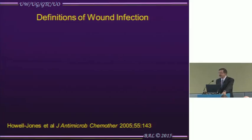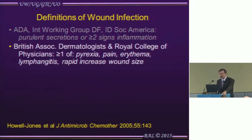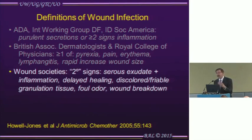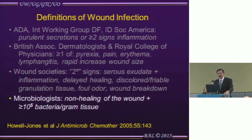What do societies that need to define wound infection do? They all take slightly different routes. Some say it's the presence of pus or two or more signs of inflammation. Others say you need fever, pain, lymphangitis, and rapid increase in wound size. Many in the wound healing world believe in so-called secondary signs — things like seroexudate, delayed healing, discolored or friable granulation tissue, wound breakdown — arguing classical findings from the Greeks like rubor, calor, and dolor aren't useful. And microbiologists stick to their guns: it has to be a biopsy with greater than 10 to the 5th.